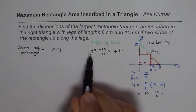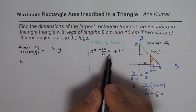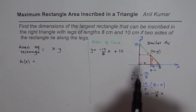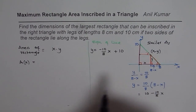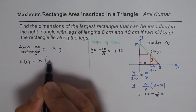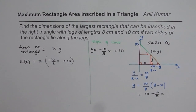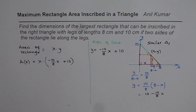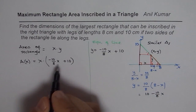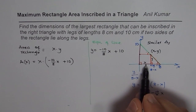We can now express area as a function of x alone. Area of x equals x times (minus (10/8)x plus 10), where x runs along the base of the triangle. To maximize this area, we need to find the critical points and also check the area at the extreme values of x.